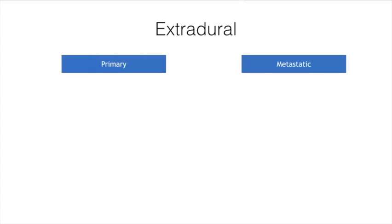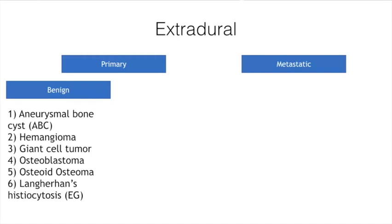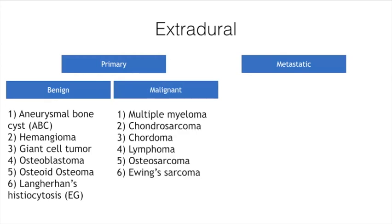The ones you should be more aware of are extradural tumors, which include primary and metastatic tumors. Primary tumors can be benign: ABCs, hemangiomas, giant cell tumors, osteoblastomas, osteoid osteomas, and Langerhans histiocytosis or eosinophilic granulomas. Malignant primary tumors include myeloma, chondrosarcoma, chordoma, lymphoma, osteosarcoma, and Ewing sarcoma, just to name a few.